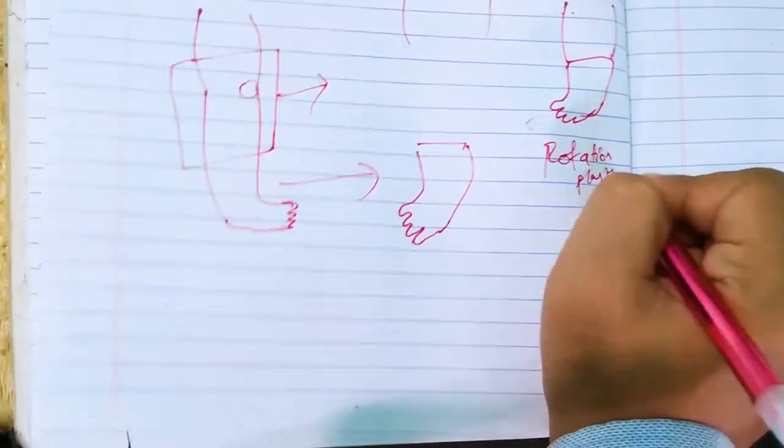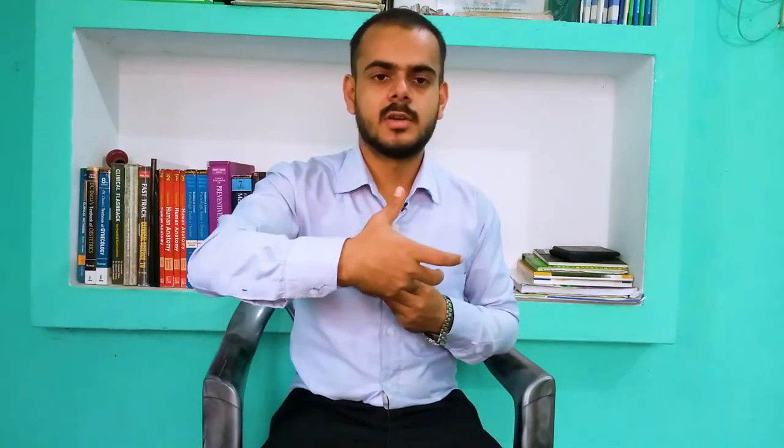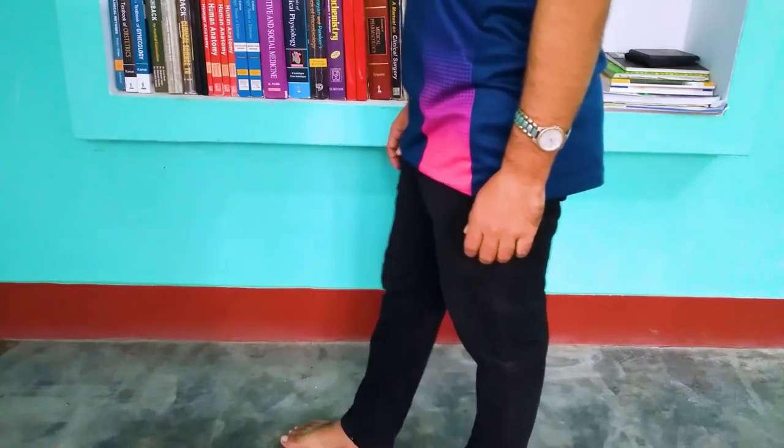Why is the ankle joint rotated 180 degrees? The foot is rotated 180 degrees before fusing because the flexion of the ankle and the flexion of the knee joint occur in opposite directions. To help the ankle joint act like a knee joint, we first rotate the foot 180 degrees so that the flexion of the ankle and the flexion of the knee occur in the same direction.